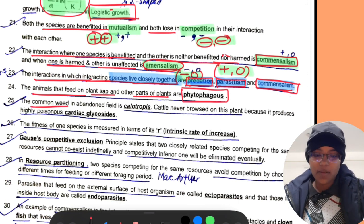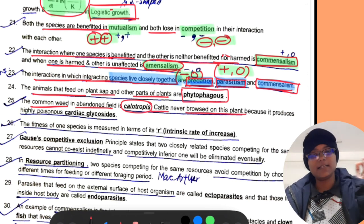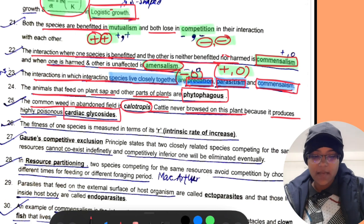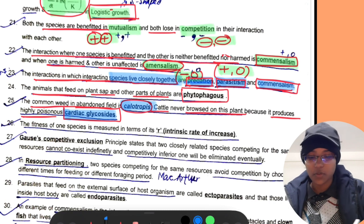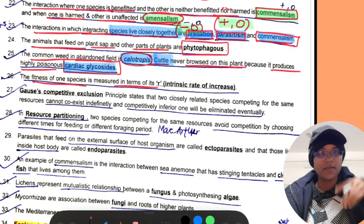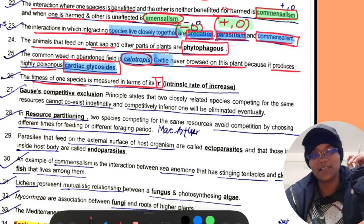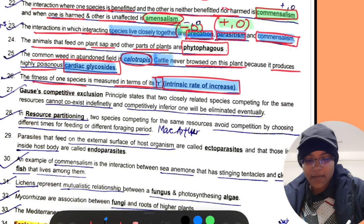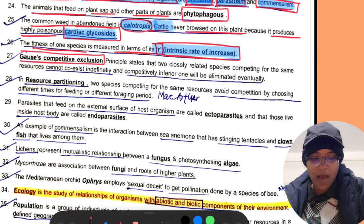The animals that feed on plant sap and other parts are called phytophagous. The common weed in abandoned field is Calotropis. Cattle never browse on this plant because it produces highly poisonous cardiac glycosides which kill the cattle if they eat it.